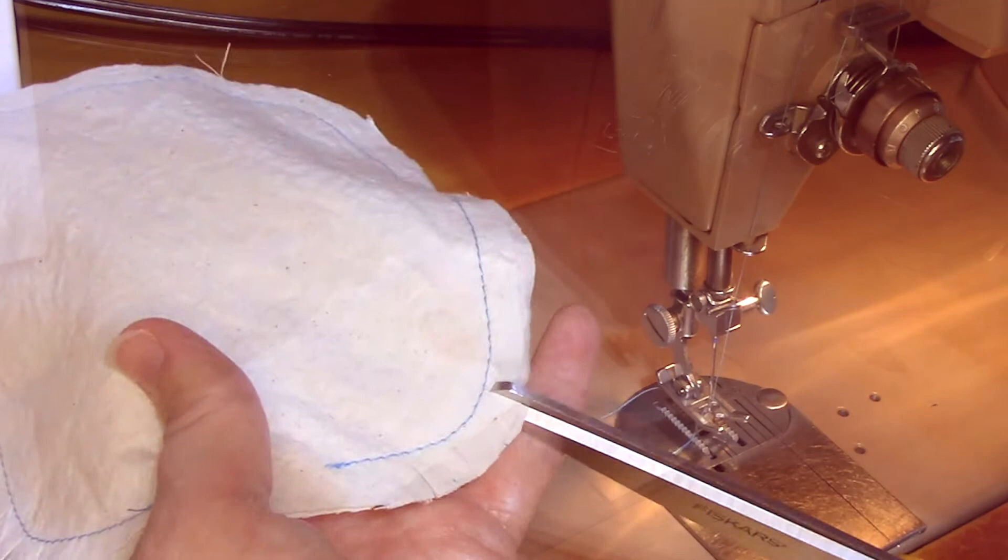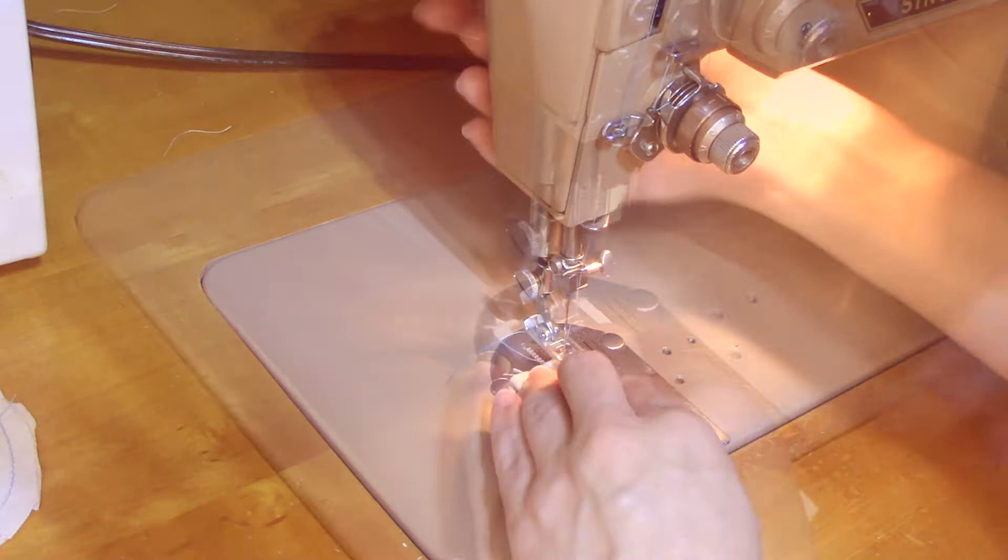After stitching your seam, clip the seam along the curves, careful to not actually cut into the stitching. Then take the middle piece, fold lengthwise, and stitch along the edge with a three-quarters inch seam allowance.